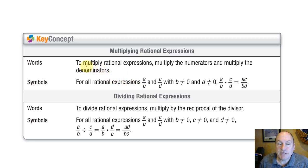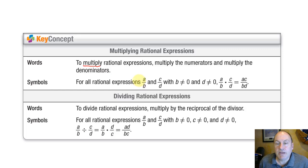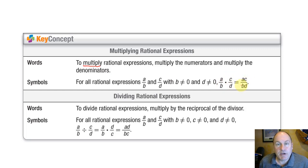To multiply rational expressions of any type, multiply the numerators and multiply the denominators — just as with numeric fractions. So if we have a over b and c over d, as long as b and d are not 0, then a/b times c/d equals ac over bd.